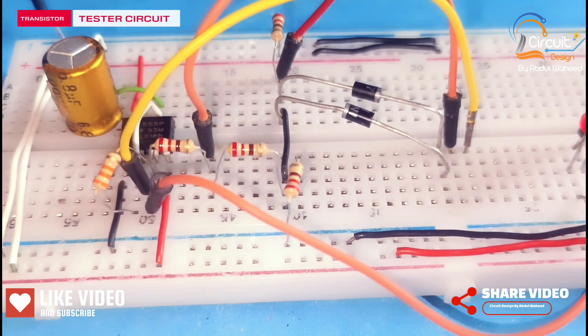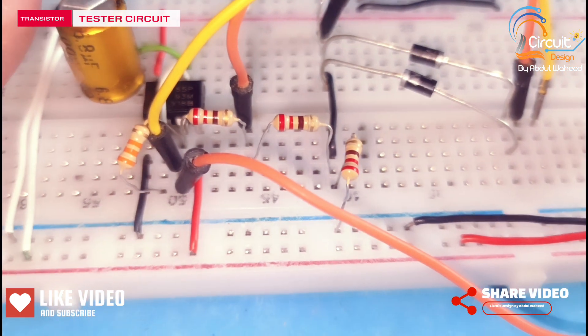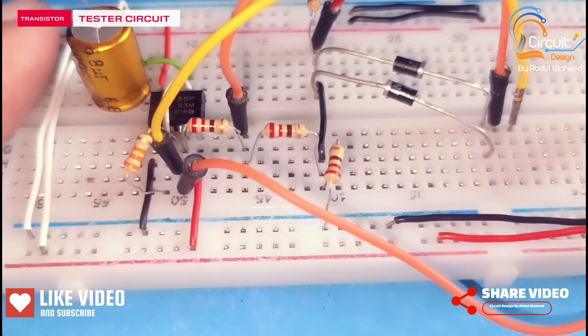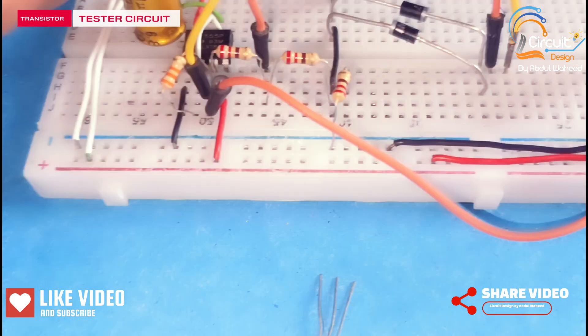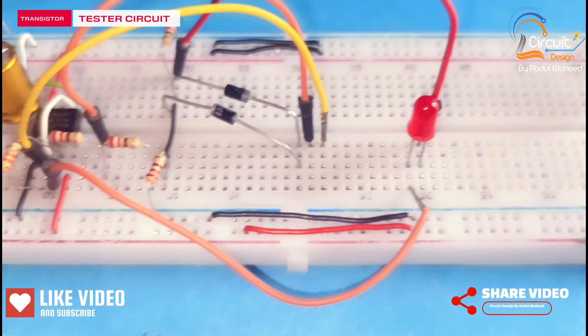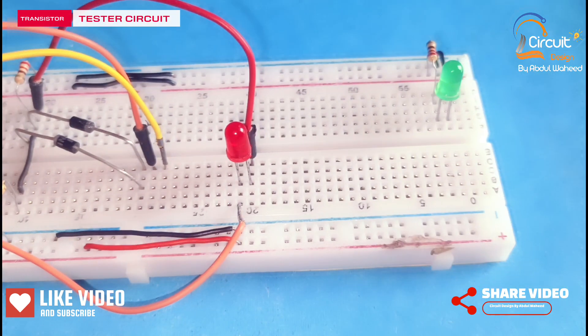You can see in this circuit I use a 555 timer, a capacitor of value 8 microfarad, a resistor of value 33k, four resistors of value 220 ohm, two semiconductor diodes, and two LEDs.